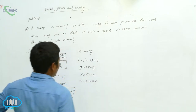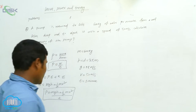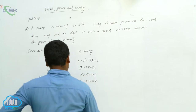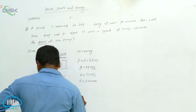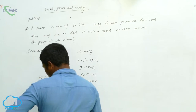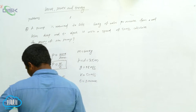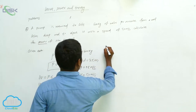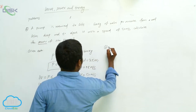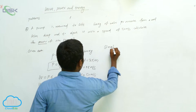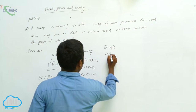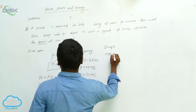Next, we have to find mgh and then one half mv squared. For mgh: m is how much? 600 kg.